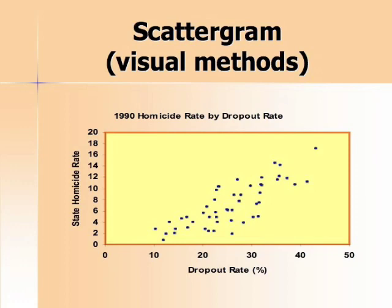A scatter plot or scattergram displays the relationship between two quantitative variables on a graph. This basically involves plotting points on x, y coordinates and looking at the nature of that relationship.